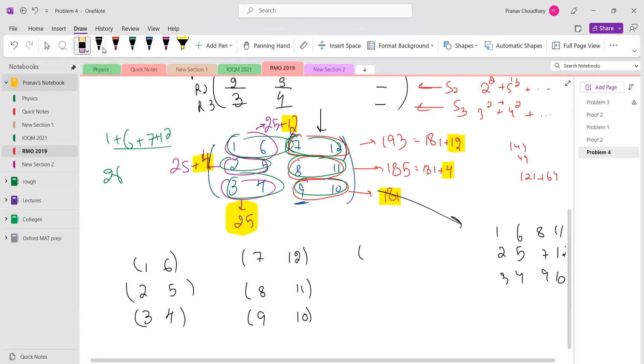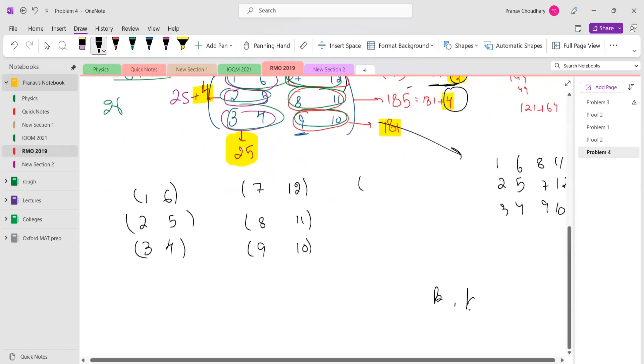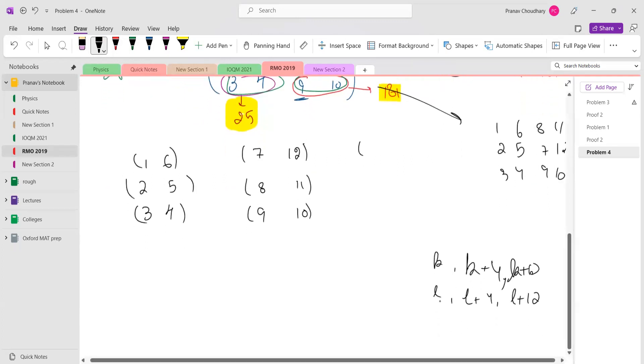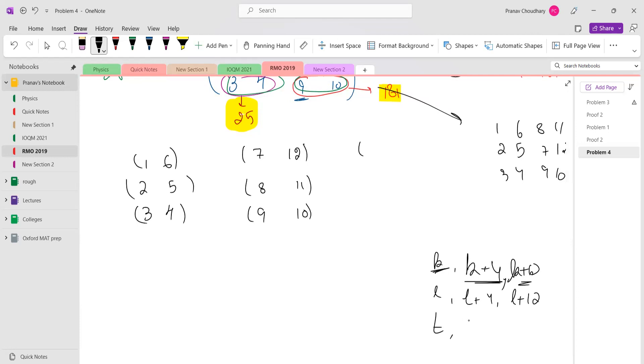The sums of squares behave nicely. You see that the sums of squares are of the form k, k+4, k+12; l, l+4, l+12. So it'll be good to add one more thing because you're trying to create three equal things and you have three different types of things. So it's probably wise to create something like t, t+4, t+12, because then you can pair them and it will work out.